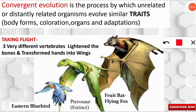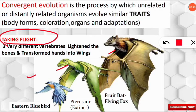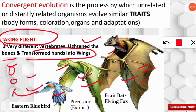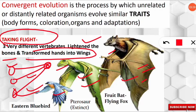Another example: three different vertebrates — the Eastern bluebird, the pterosaur (an extinct organism), and the fruit bat — evolved the same feature for flight. The trait was the lightening of bones, with their hand bones transformed into wings. They had three different ancestors, but when we look at them, they all have hands modified into wings. This is another example of convergent evolution.